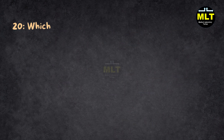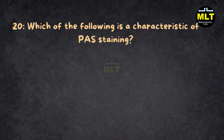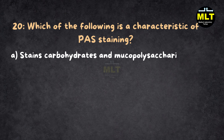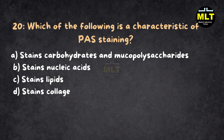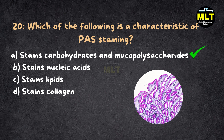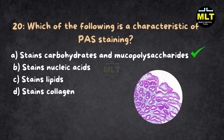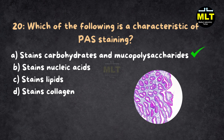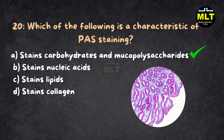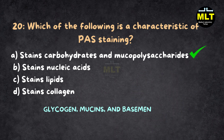Question 20: Which of the following is a characteristic of PAS staining? Options: A. Stains carbohydrates and mucopolysaccharides, B. Stains nucleic acids, C. Stains lipids, D. Stains collagen. Correct Answer: A. Stains carbohydrates and mucopolysaccharides. Explanation: PAS staining highlights carbohydrates and mucopolysaccharides in tissues, giving them a bright magenta color. It's particularly useful for identifying structures like glycogen, mucins, and basement membranes.